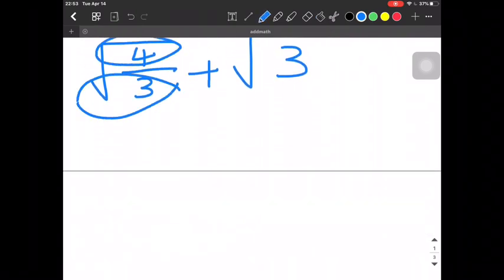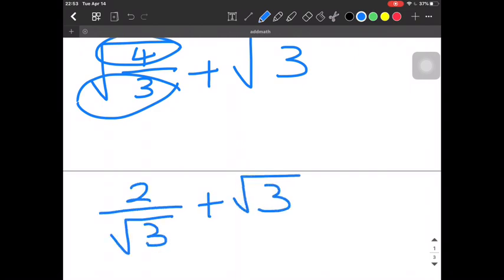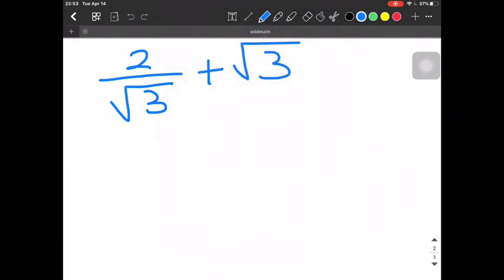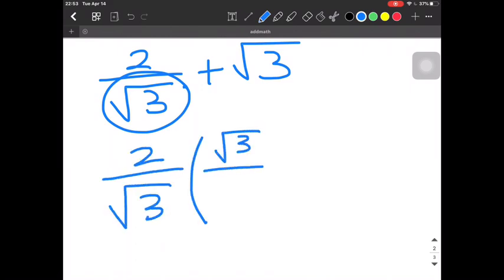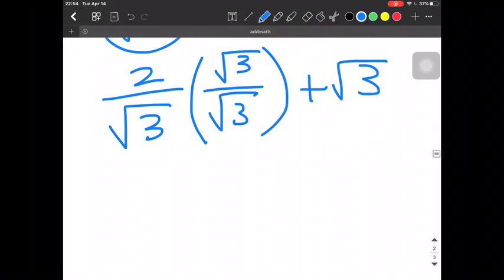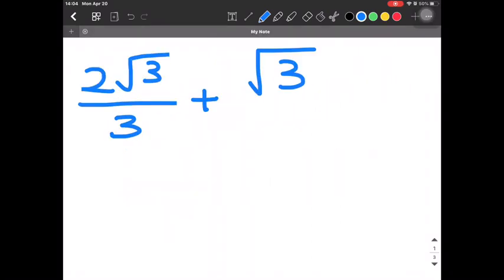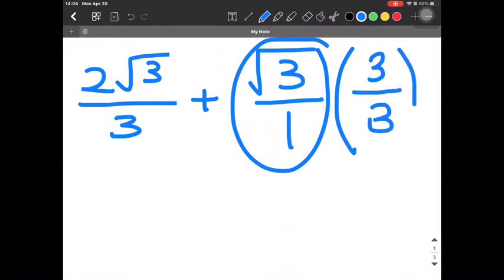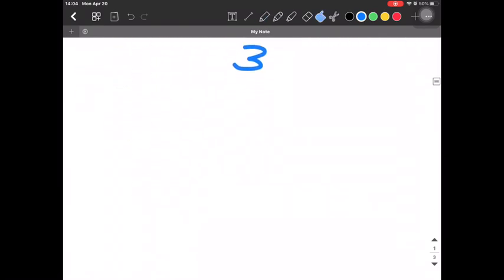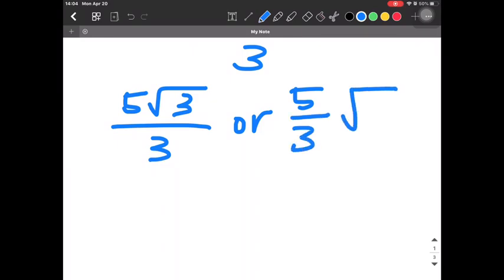After this, we need to rationalize this because we don't want the surds as the denominator. So we are going to multiply this with the conjugate surd, which is surd 3. And then after we have done this, 2 surd 3 over 3 plus surd 3. So now we know that surd 3 is equal to surd 3 over 1, so we need to equalize the denominator by times this whole equation with 3 over 3. So we will get 2 surd 3 plus 3 surd 3 over 3, and the final answer will be 5 surd 3 over 3, or 5 over 3 surd 3. And we are done!